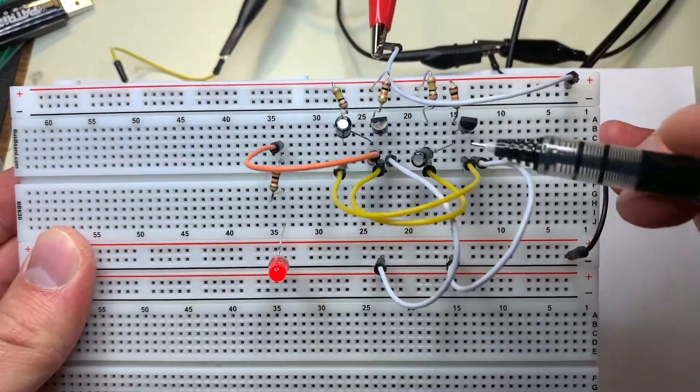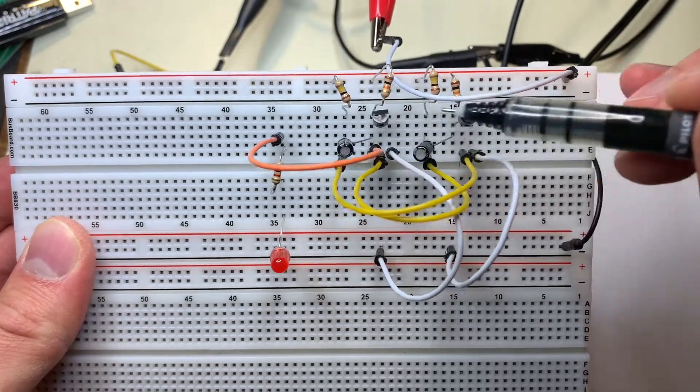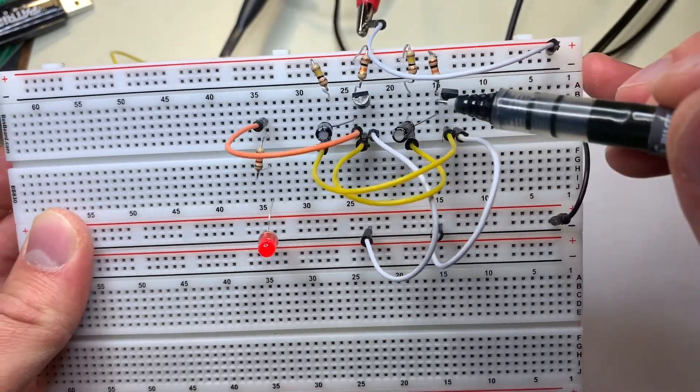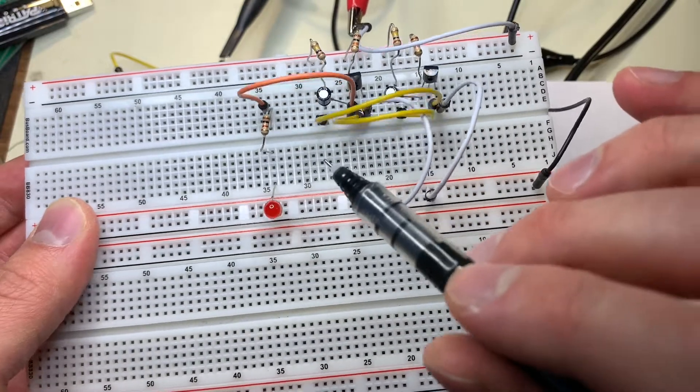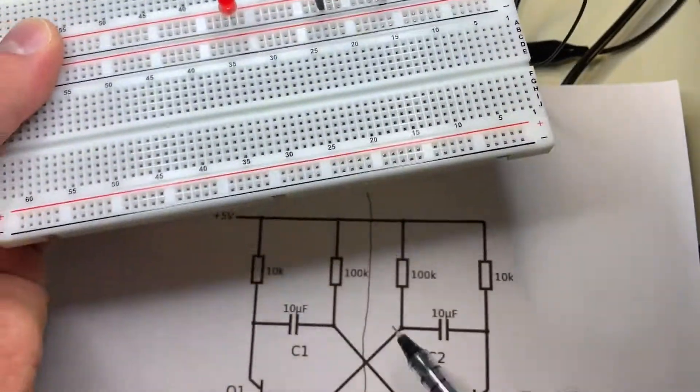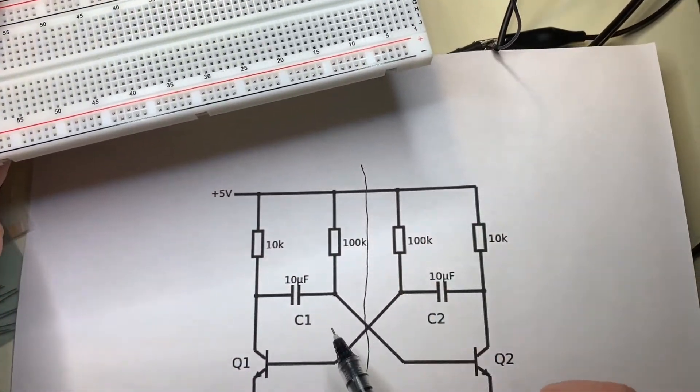That's exactly how it's done on the circuit over here, where you can see that these resistors, capacitors, and transistors are all lined up in the same way, and the only thing that's separating them are these two yellow wires which connect the two sides of the circuit together.